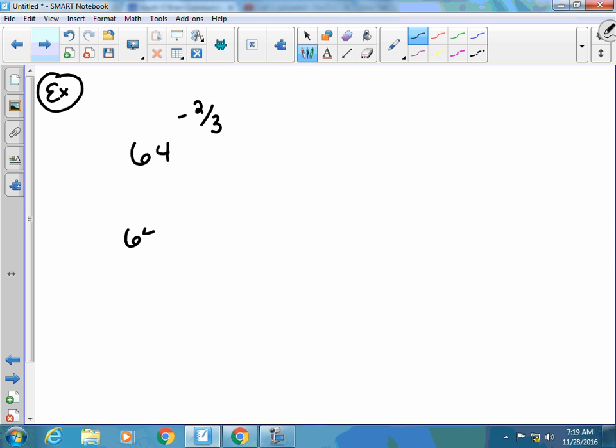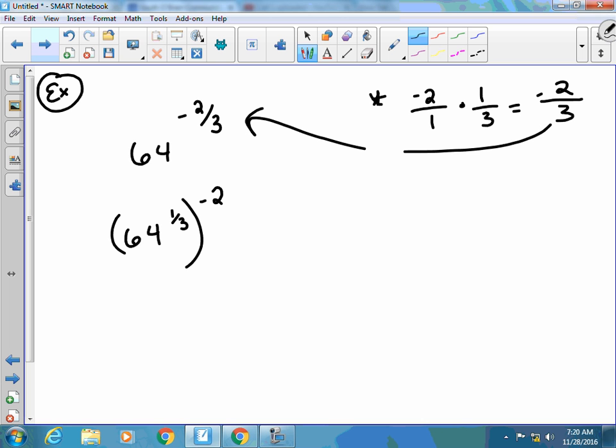So I've got 64 to the 1 third, to the power of 1 third, and I'm just splitting this up to the power of negative 2. So, here's why I split this up, because if I take negative 2 over 1 times 1 over 3, it gives me that negative 2 thirds, which is what we had over here. I just broke this down.